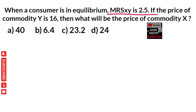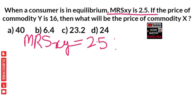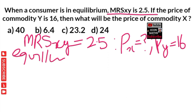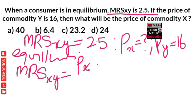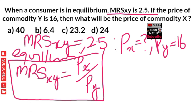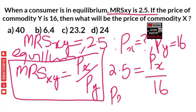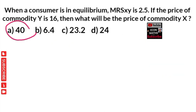To recap the solution: we were given that the marginal rate of substitution between X and Y was 2.5, and the price of Y was 16; we had to find the price of X. Using the equilibrium condition — MRS(X,Y) equals price of X divided by price of Y — we set 2.5 equal to price of X divided by 16. Solving, price of X equals 16 multiplied by 2.5, which comes out to 40. So the correct answer is 40.